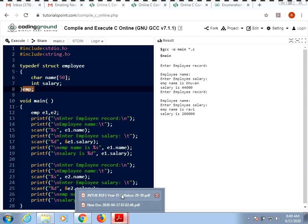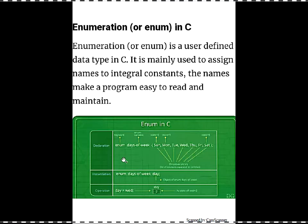The second thing we are going to learn in this session is enumeration. Enumeration is a user-defined data type in C language, mainly used to assign integral constants to names. As numbers will be easier to understand compared to names, you are going to assign integral constants to your names. First, let's understand what is the use of enumeration.